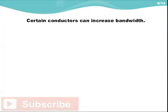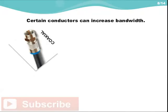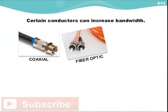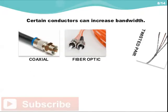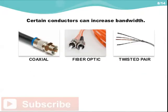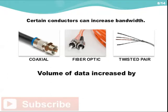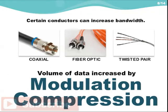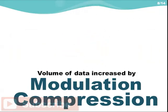The use of certain types of conductors can increase bandwidth. Coaxial cables, fiber optic cables, and twisted pair cables are all examples of conductors. The volume of data flow can also be increased by various modulation and compression techniques.